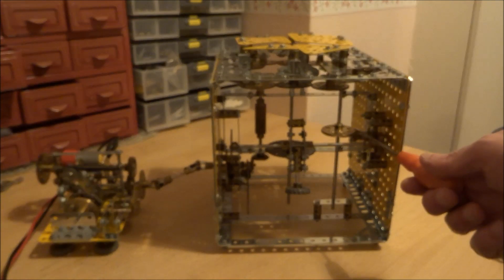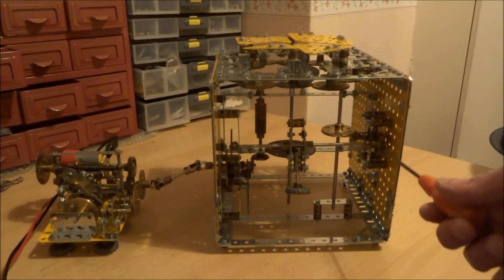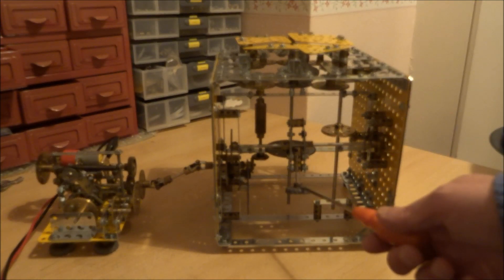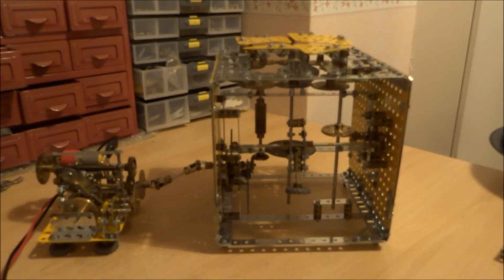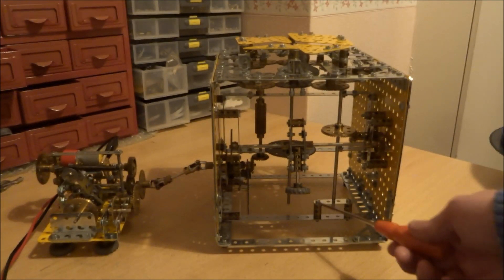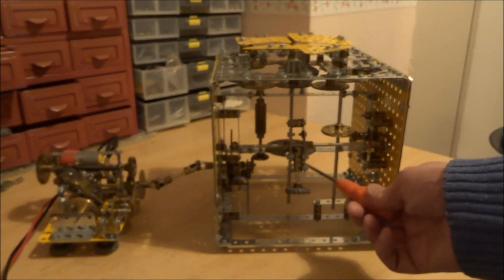Then we go through a bevel here and then through to here. Here we have the arm which lifts the Marionette and you'll see later on that it lifts this gear wheel here.